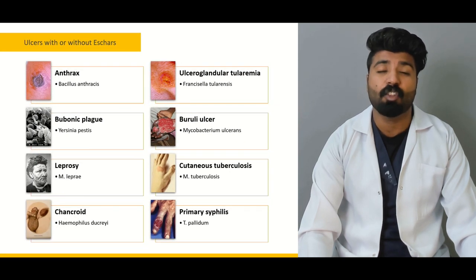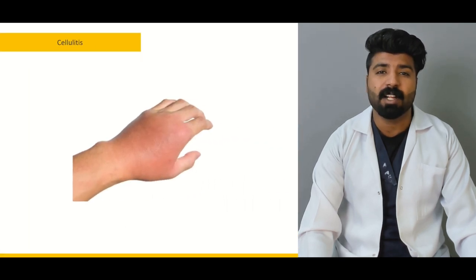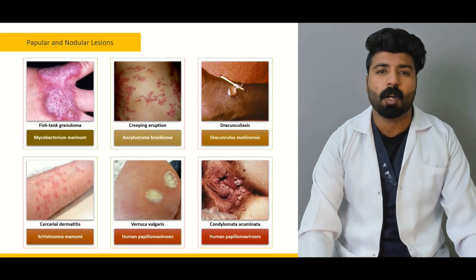Next, we're going to talk about ulcers with or without eschar — which ulcers exist and which pathology is found. Then we'll cover erysipelas, caused by Streptococcus pyogenes, and how it is differentiated from cellulitis. We're going to talk about what cellulitis is, how it manifests, what organisms are responsible, and how it is treated.